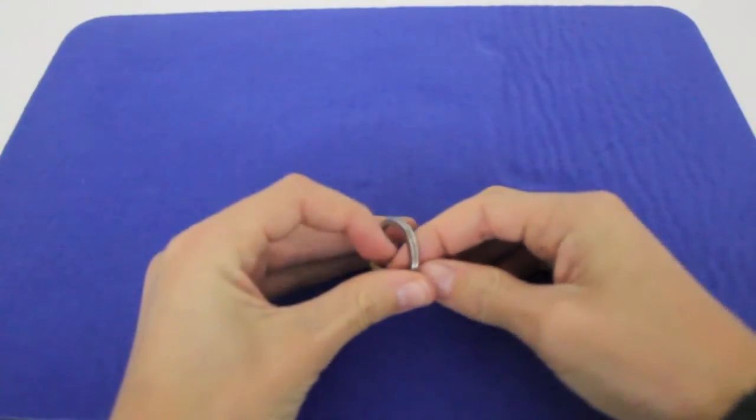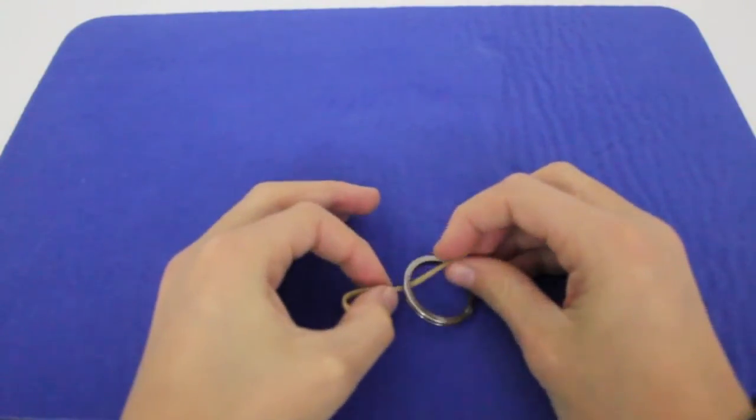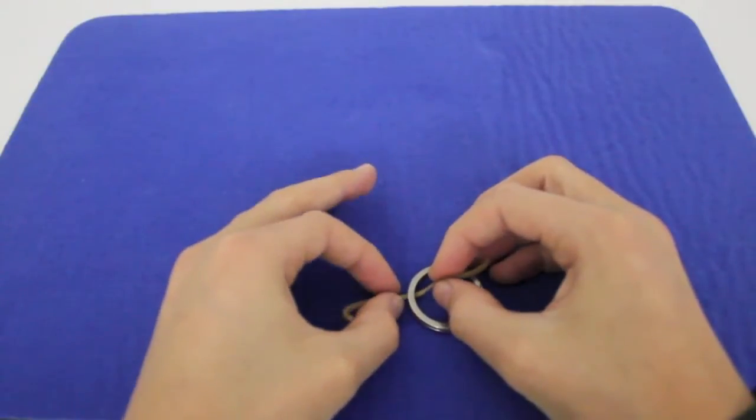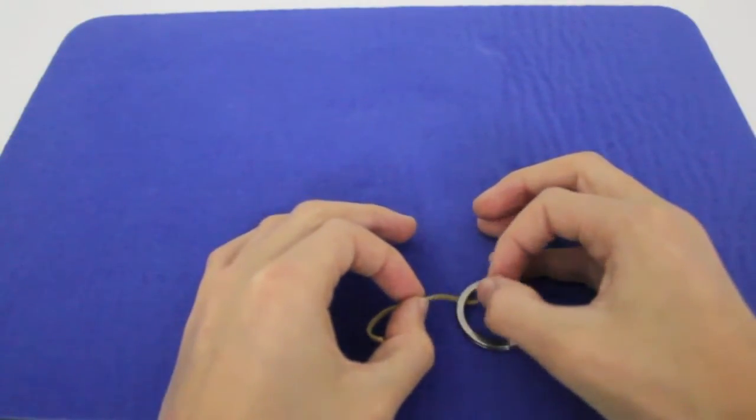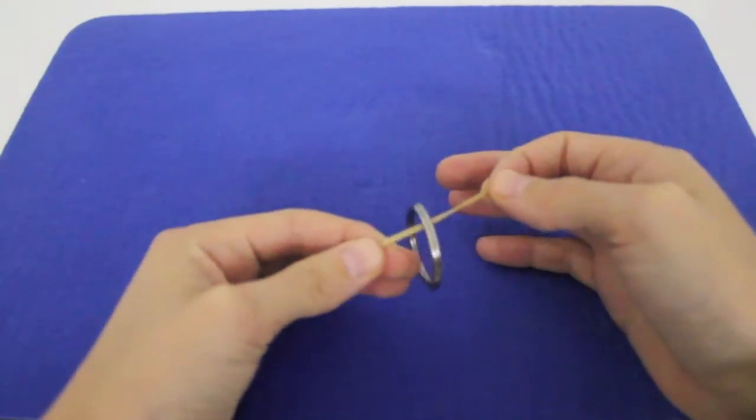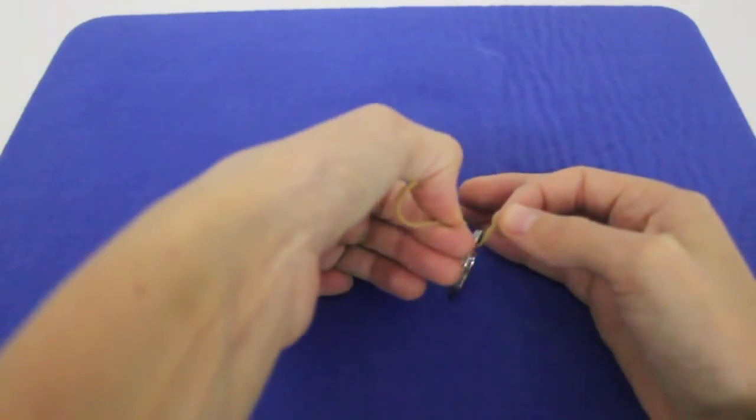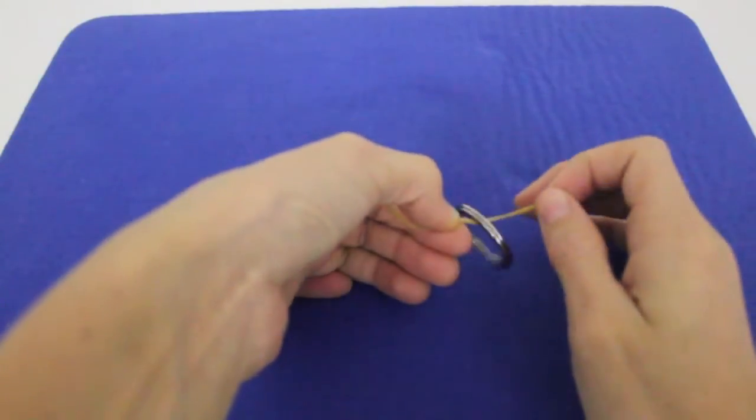So what you're going to do is when you put the rubber band through the ring, you're going to take like half of it on one side and the edge on the other side. And what you're going to do, you're going to pinch the side where you've got extra rubber band.